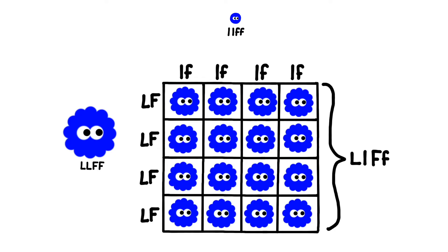Despite having the large and fluffy phenotype, every one of the offspring is going to be heterozygous for size and for fluffiness. In short, they're all going to be dihybrids.